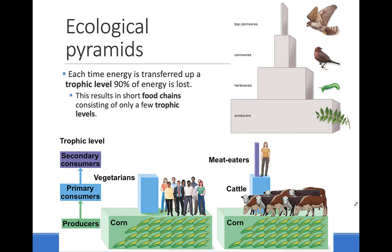The ecological pyramid is a visualization of the energy content of each trophic level. The producers receive their energy from the sun. Only a small amount, about 10%, is passed on to the herbivores. This is because the producers use some of the energy for themselves, and much of it is lost as heat.